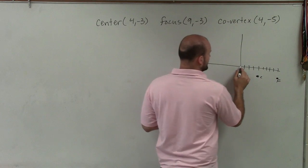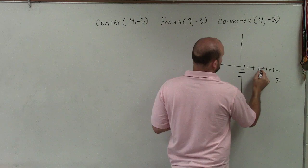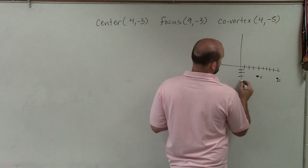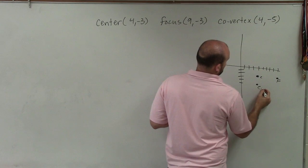And the co-vertex is at 4, negative 5. One, two, three, four, negative five. One, two, three, four, five. OK.